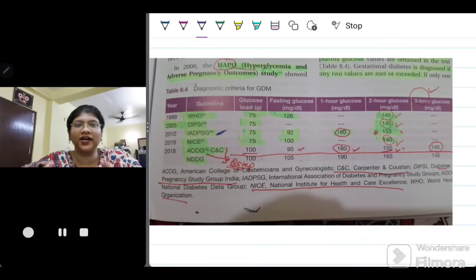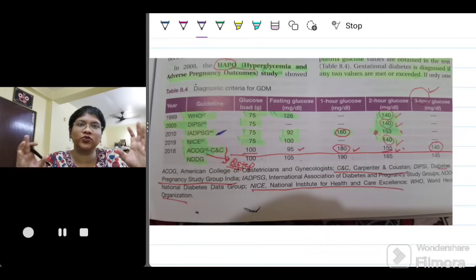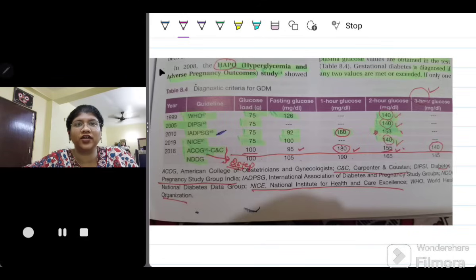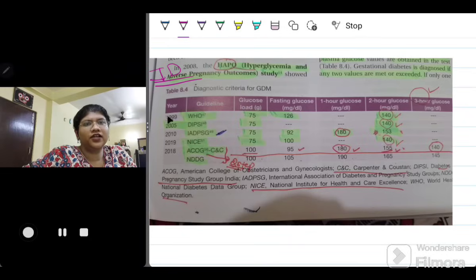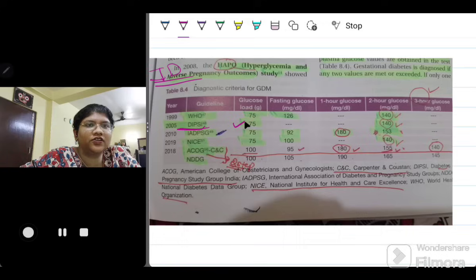Now that I have bombarded you with all the guidelines let me make it easy for you. Let me summarize it in one table. I found this very informative and useful during my MS exam postgraduation days. This snapshot I'm sharing from the Ian Donald textbook of high risk obstetrics. This beautifully summarizes all the diagnostic criteria in one table. First we see the DIPSI criteria where we are using 75 gram glucose and after two hours the cutoff is 140.